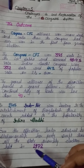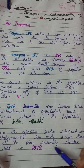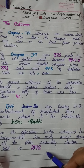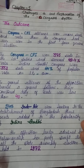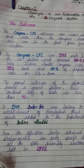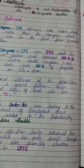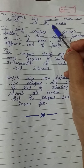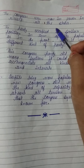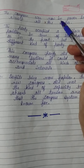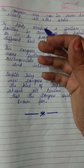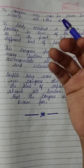Her party swept through all the state assembly elections held in 1972. When the assembly elections were held, Congress was now in power in almost all the states.